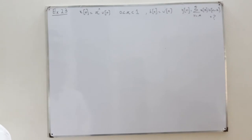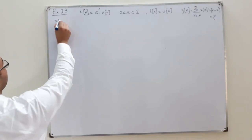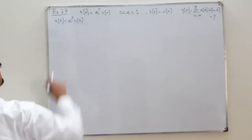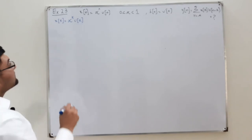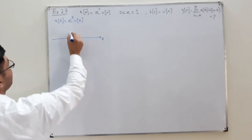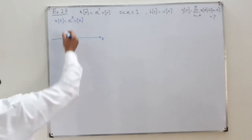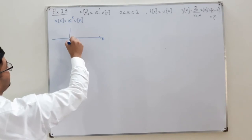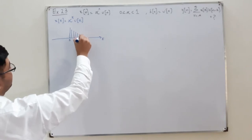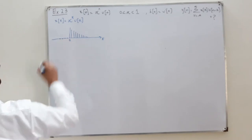You know the steps. In step number 1, you interchange the variables. So x(k) would be alpha to the power k times u(k). Since alpha is between 0 and 1, this is a decreasing exponential function. At k=0, the value is 1 — anything to the power 0 is 1 — and then it decreases exponentially. It is 0 on the negative side. This is your x(k).